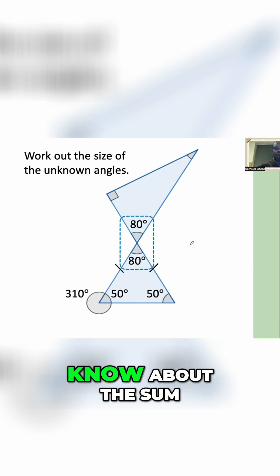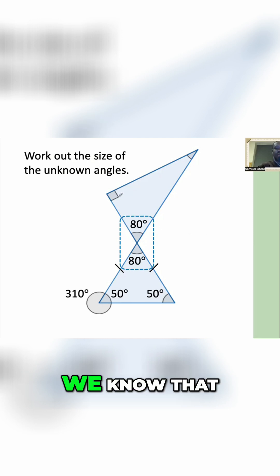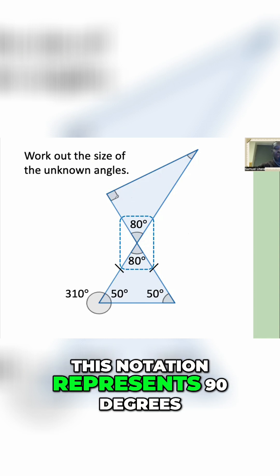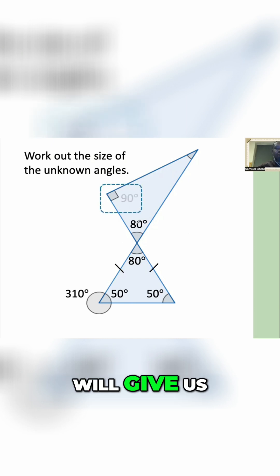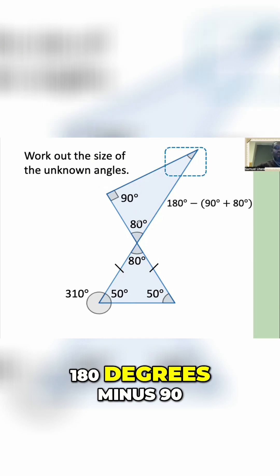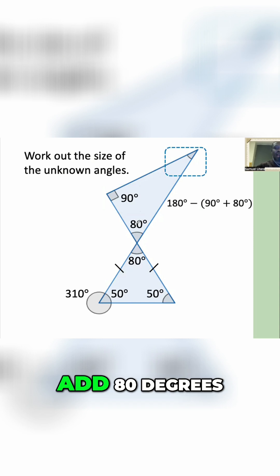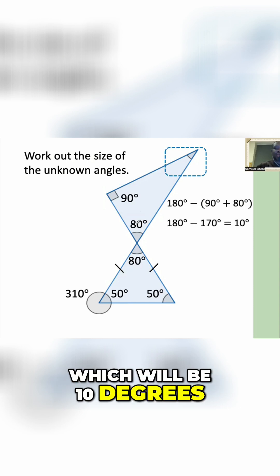What other information do we know about angles in a triangle? First, we know that this mark here, this notation, represents 90 degrees. So we have two known angles in a triangle. We can find the other angle by subtracting these angles from 180 degrees. That will give us 180 degrees minus 90 minus 80 degrees, which equals 10 degrees.